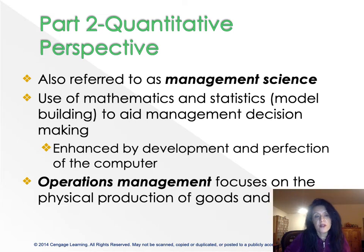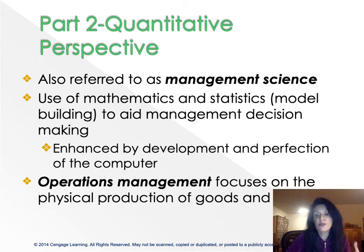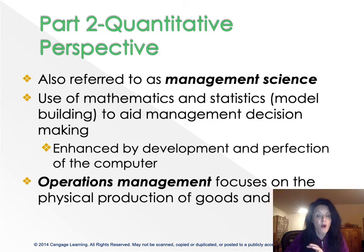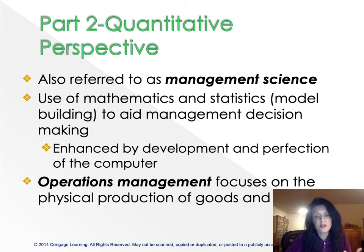Operations management, on the other hand, refers to the field of management that specializes in the physical production of goods and services using management science to solve manufacturing problems. So whereas operations research is more research-oriented, using math and statistics, operations management is more management-oriented, specializing in the physical production of goods and services.